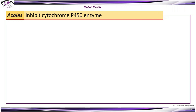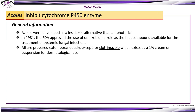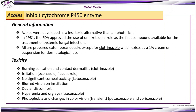Azoles inhibit a cytochrome P450 enzyme. They were developed as a less toxic alternative to amphotericin B. In 1981, oral ketoconazole was approved as the first compound available for treatment of systemic fungal infections. All azoles are prepared extemporaneously, except for clotrimazole, which exists as a 1% cream or suspension for dermatological use. Toxicity includes burning sensation and contact dermatitis; with local use, irritation, blurred vision on instillation, ocular discomfort, hyperemia, dry eye, photophobia, and changes in color vision may occur.